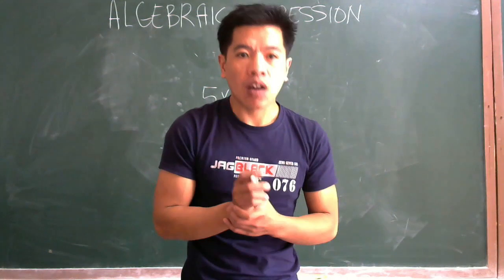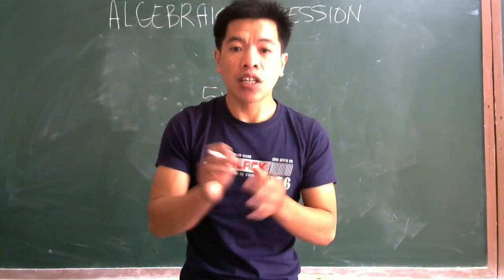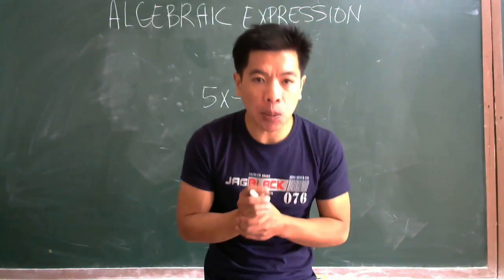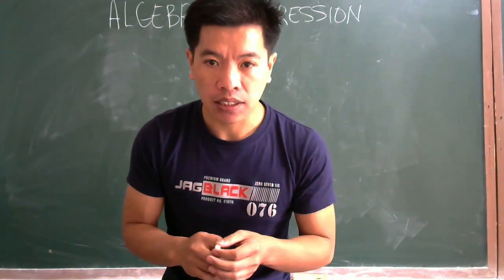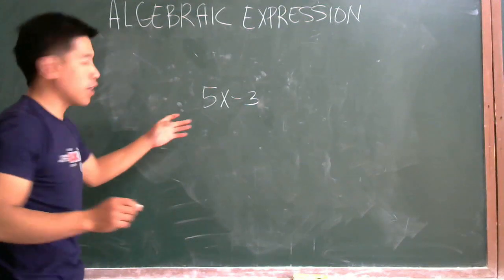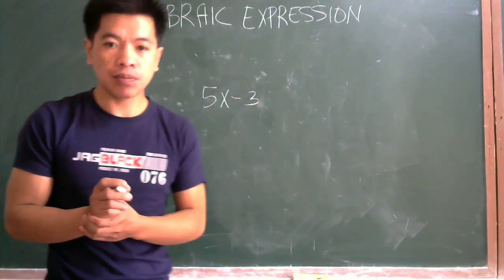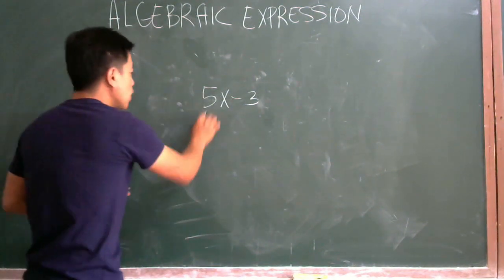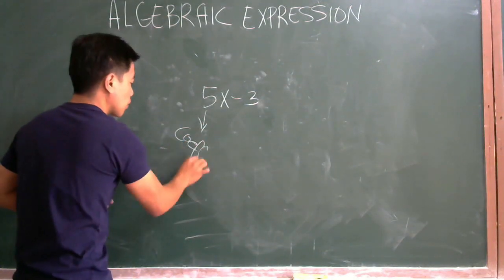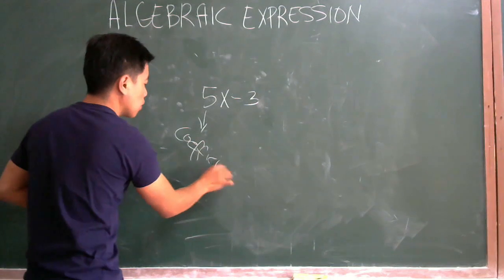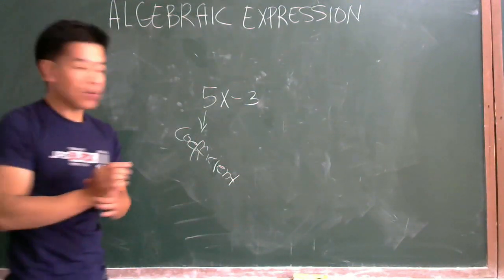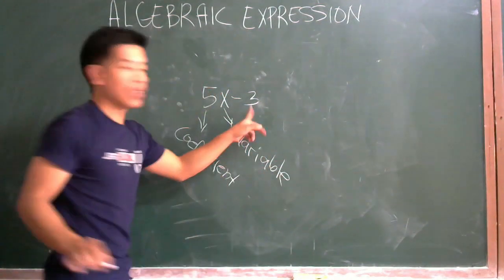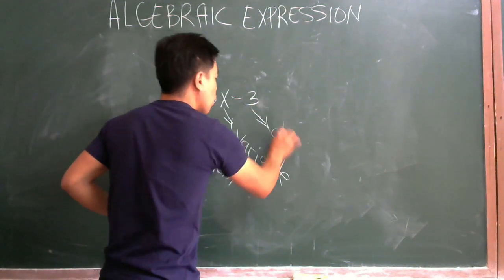So how about a constant? A constant is a number that does not change in the expression. How about the coefficient? A coefficient is a number multiplied or divided by a variable. For example, we have the algebraic expression 5X minus 3. In here, 5 is our coefficient, X is our variable, and 3 or negative 3 is our constant.